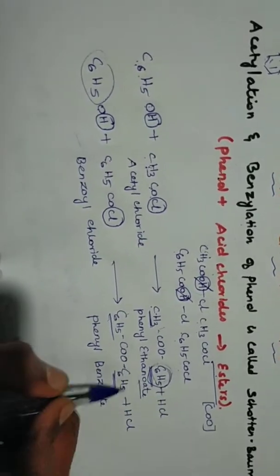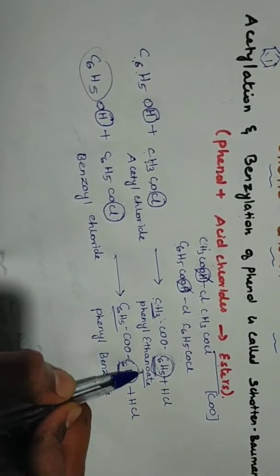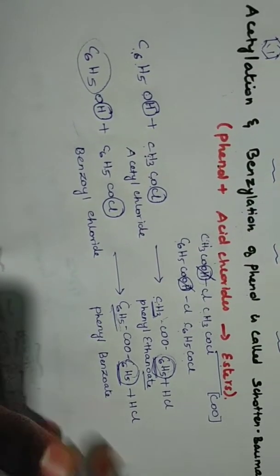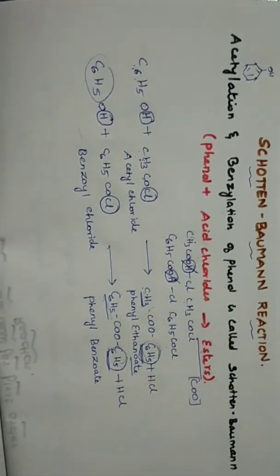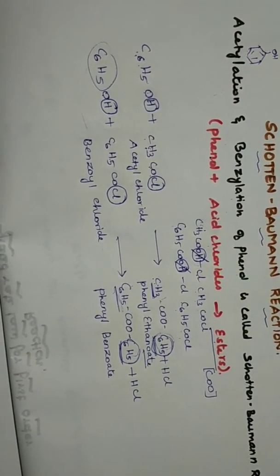So this is OAT, C6 is phenyl group. C6H5 is phenyl group, phenyl, two carbon. Then it is phenyl benzoate. So this is the Schotten-Baumann reaction, very easy. So next we will meet with the Williamson ether synthesis.